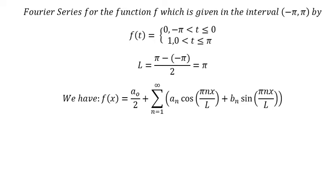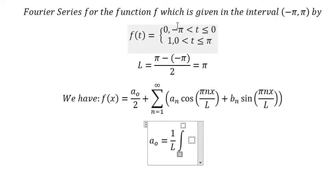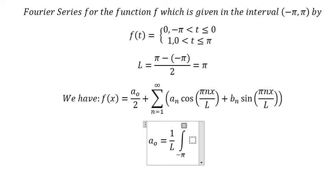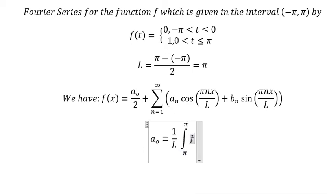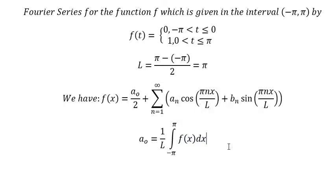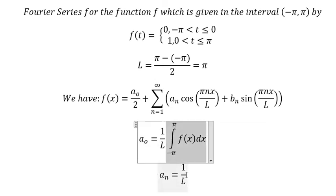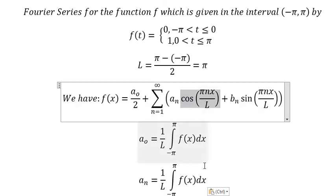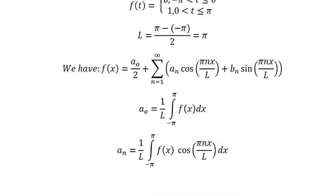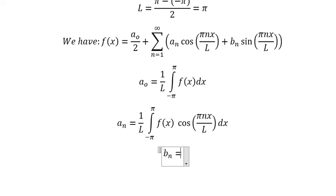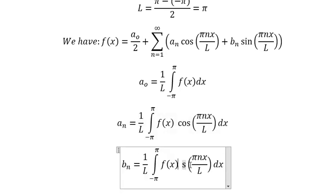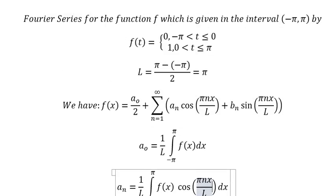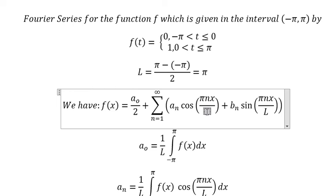Now we have the coefficients a₀, aₙ, and bₙ. For a₀, that is one over L times the integral from negative b to b of f(s) ds. For aₙ, we have one over L times the integral with cosine of (nπs over L). For bₙ, we do similarly but with sine, and we know that L in this situation equals b.